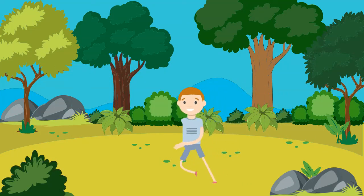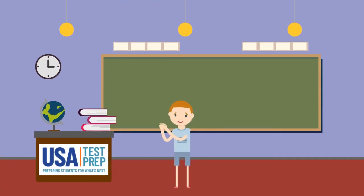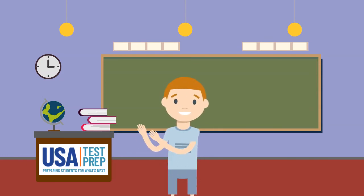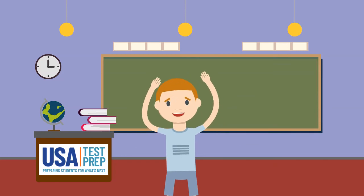Follow me back to the classroom to wrap up. We had a great time learning about calendars today. We learned that there are seven days in one week. We also learned that most months have either 30 or 31 days. Continue to use calendars to keep track of important dates. Maybe find your birthday on a calendar and count how many days or weeks away it is.